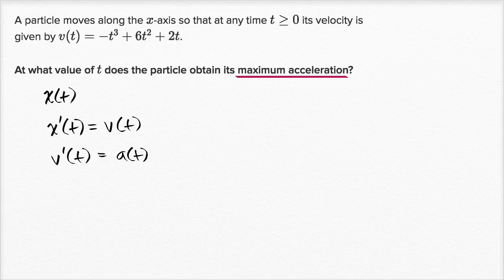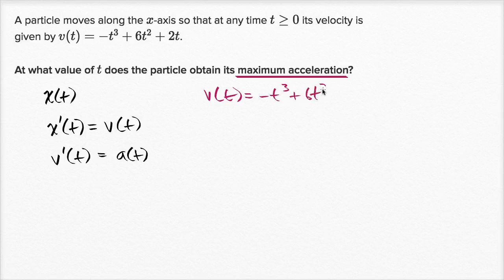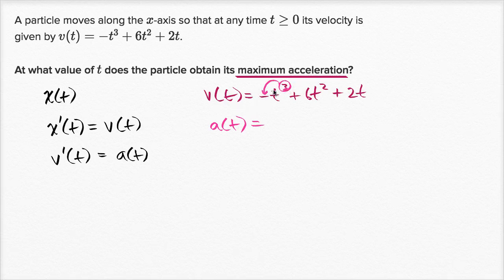We know that v(t) = -t³ + 6t² + 2t. From that we can figure out the acceleration as a function of time, which is just the derivative with respect to t of the velocity. Using the power rule: a(t) = -3t² + 12t + 2. That's our acceleration as a function of time.